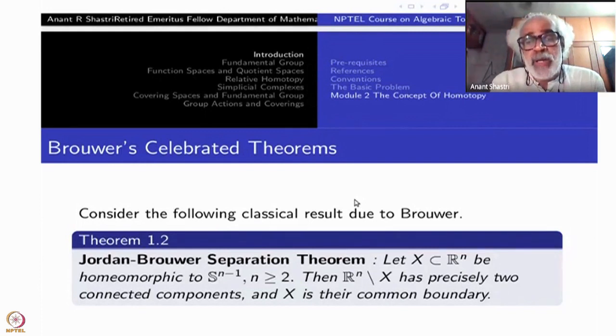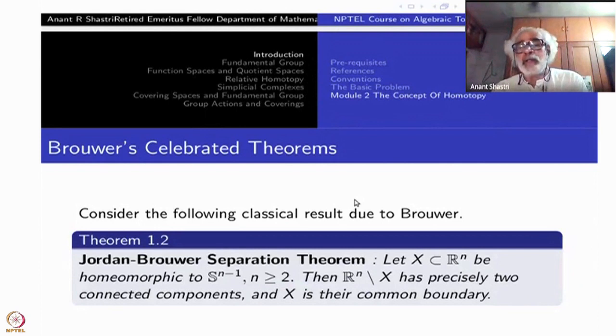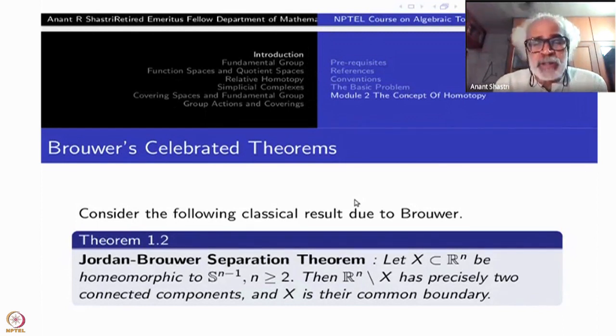In the case of n equal to 2, a copy of S^(n-1) one calls it as a Jordan curve, Jordan loop. So Jordan loop separates the plane exactly in two components. One is inside, another is outside. There is only one bounded region and there is only one unbounded region.